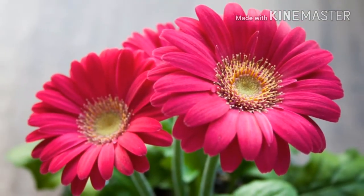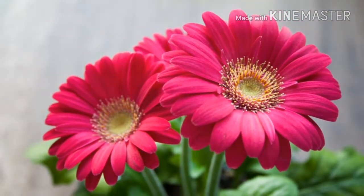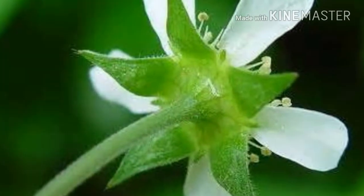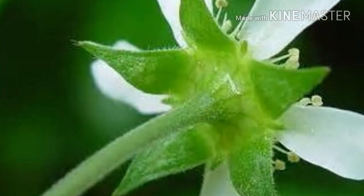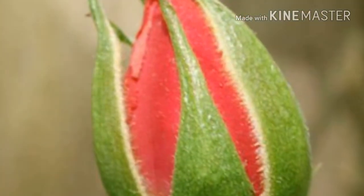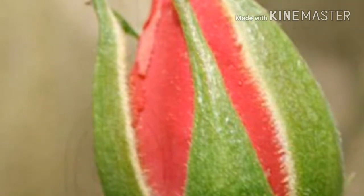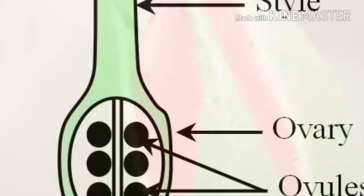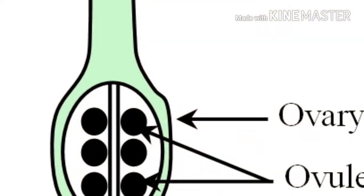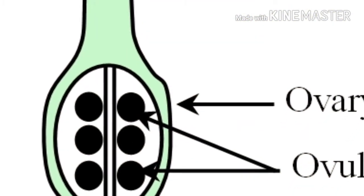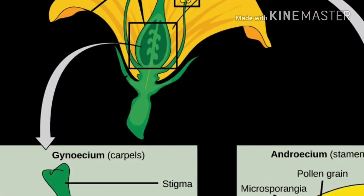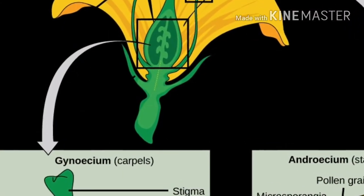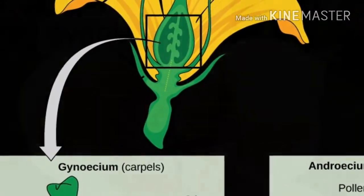Now let's talk about the sepals. The sepals, also called the calyx, are the green-colored parts of the flower that function to protect the developing bud.